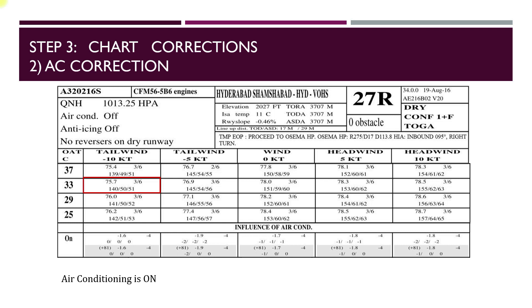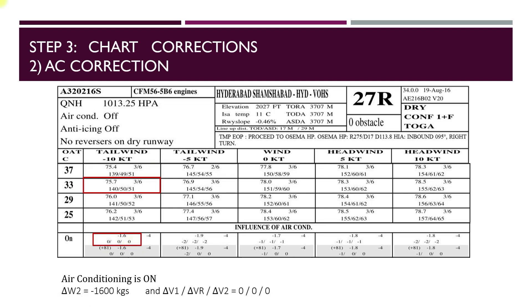The second chart correction is the air conditioning correction. Our chart provides this correction directly. Going down again on the tailwinds of 10 knots column, with air conditioning on, a weight correction of minus 1.6 tons needs to be applied, and there are no speed corrections required. So delta W2 = minus 1,600 kg, and delta V1, delta VR and delta V2 are all 0.